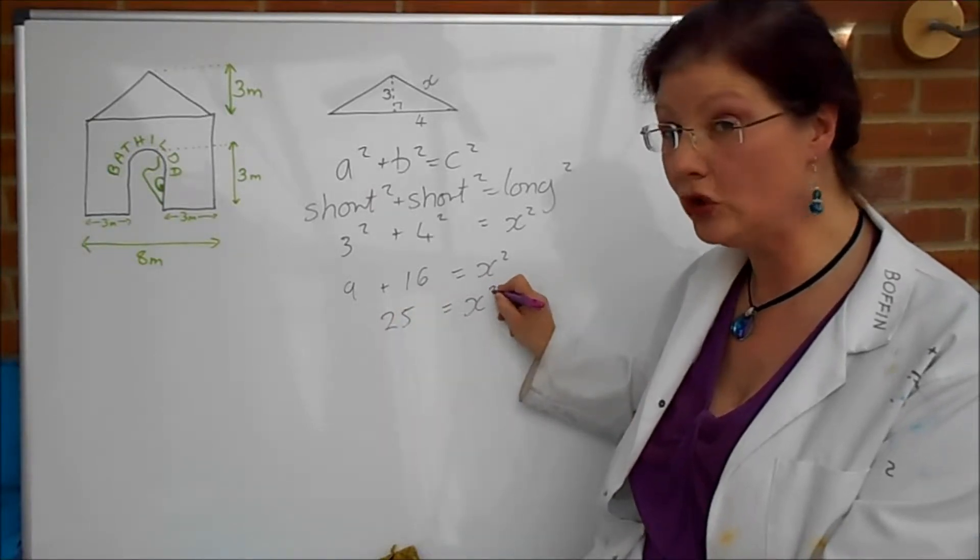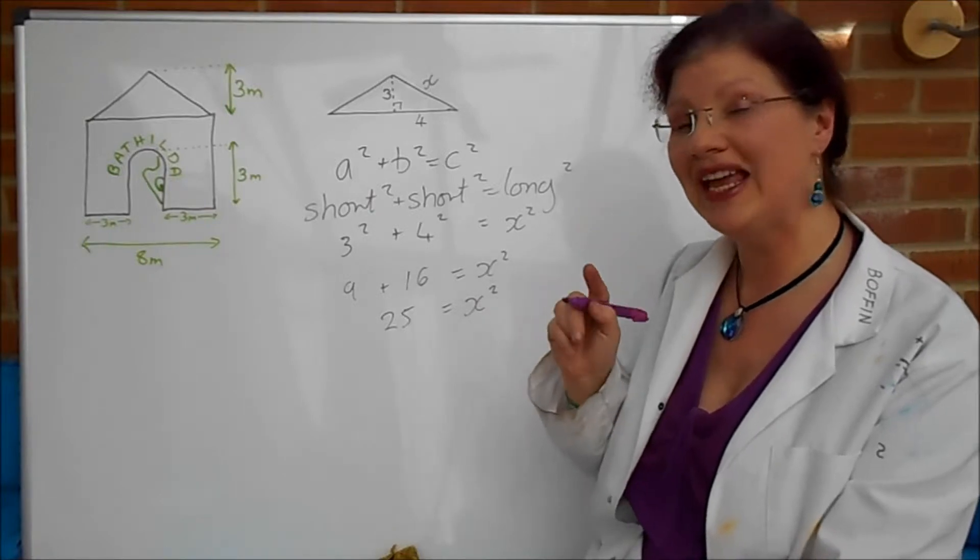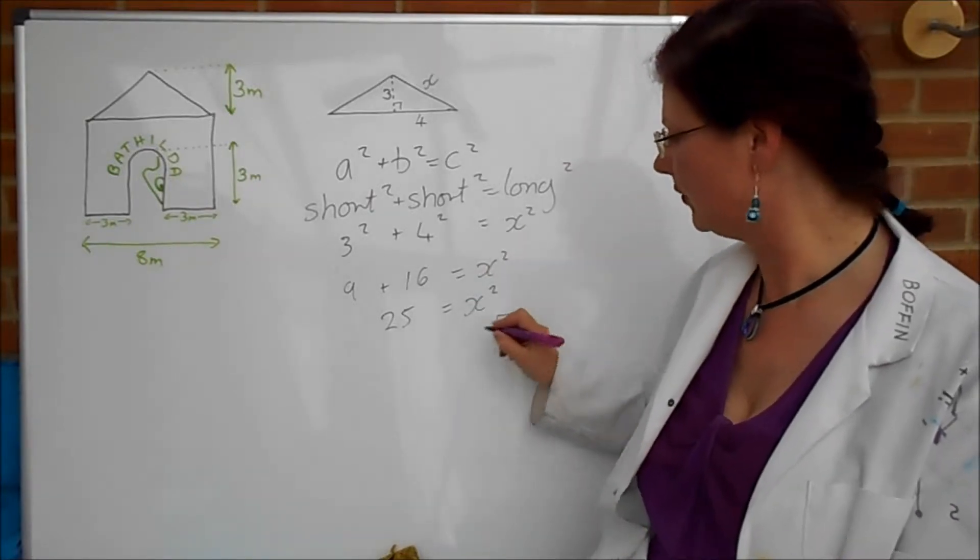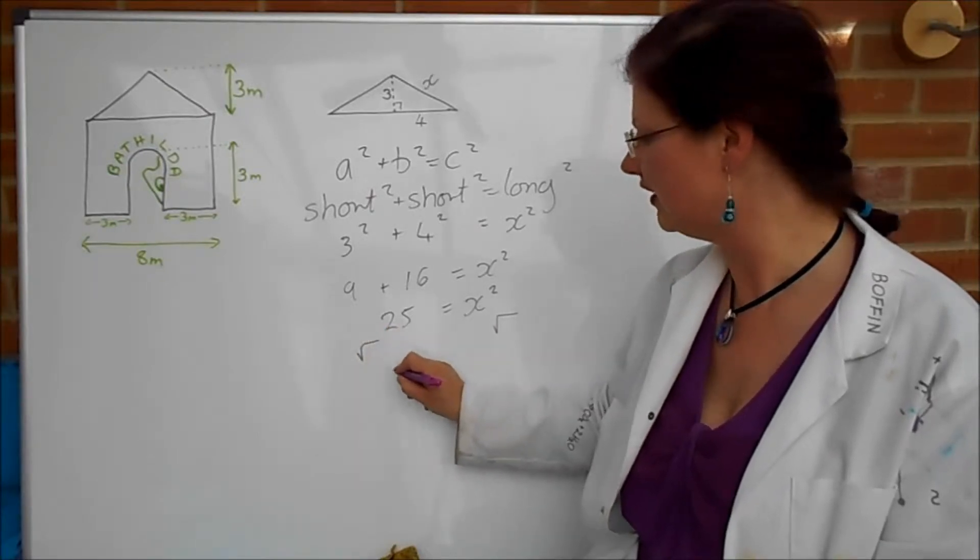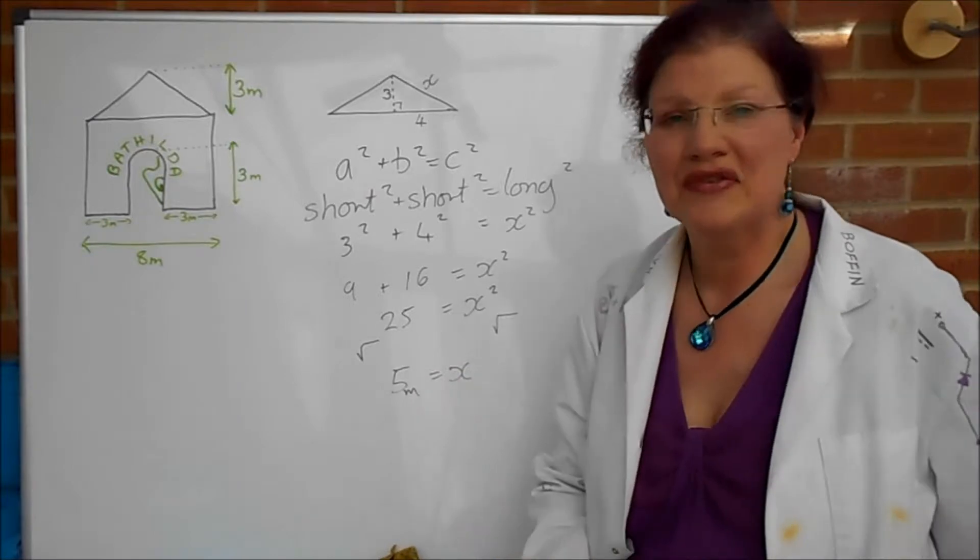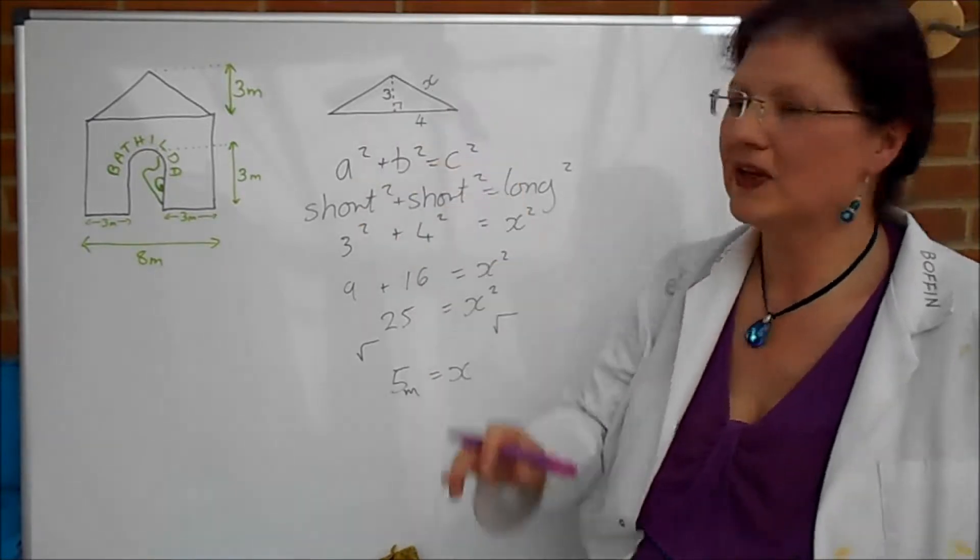Please note twenty-five is not your answer. Twenty-five is x squared so we have to square root it so I'm going to square root both sides which is going to give me five equals x. In this case five meters. So the slopey side is five meters.